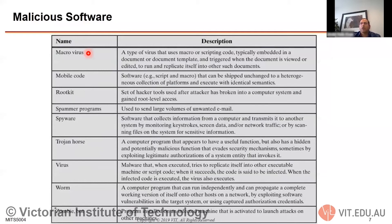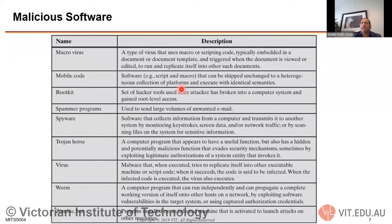Macro viruses come embedded as a template or macro code in documents — like a Word document or spreadsheet. When you enable macros, the macro code executes and causes damage to your network. Mobile code is a script or code that is self-replicating and can run on multiple platforms. It is called 'mobile' because it moves from one computer to another — and even into different devices like smartphones.